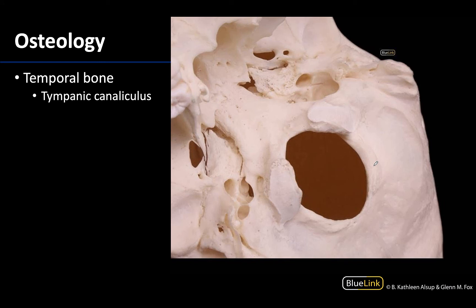Speaking of super tiny foramina, let's find another one, but we are going to find this one a little easier from this inferolateral view. We are trying to find the tympanic canaliculus — a really fun long name — which is how preganglionic fibers from the glossopharyngeal nerve will re-enter the skull to get into the middle ear region as the tympanic nerve. To find this structure, I look for two easier-to-locate structures: the first is the external opening of the carotid canal and the second is going to be the jugular foramen. Right in between these two structures is another foramen about the size of a pinprick, and that is the tympanic canaliculus.